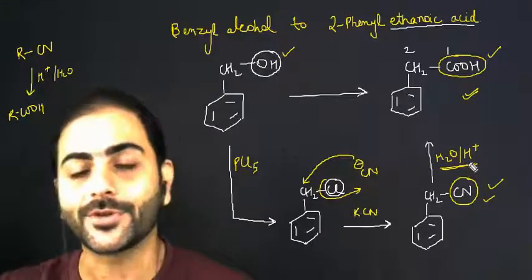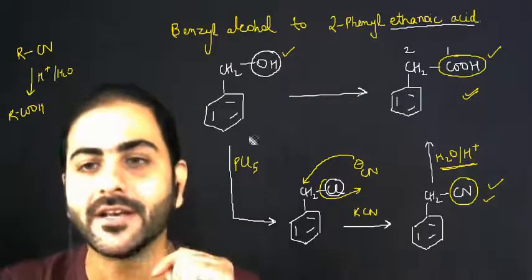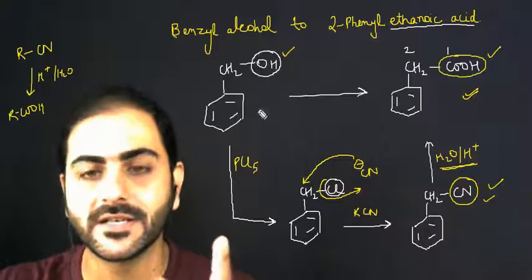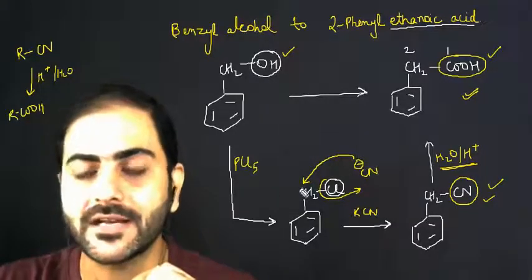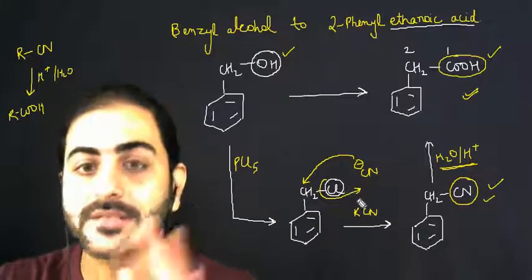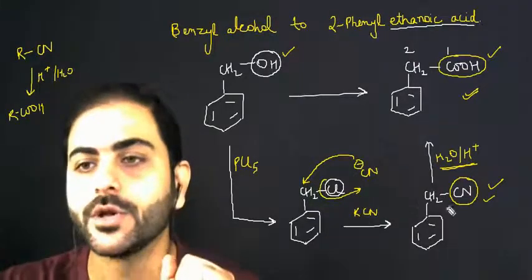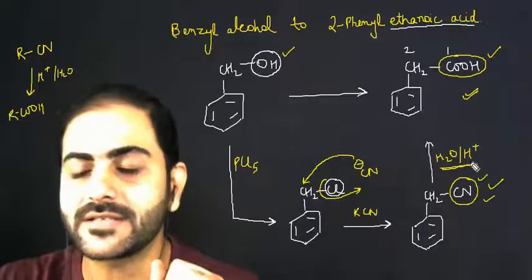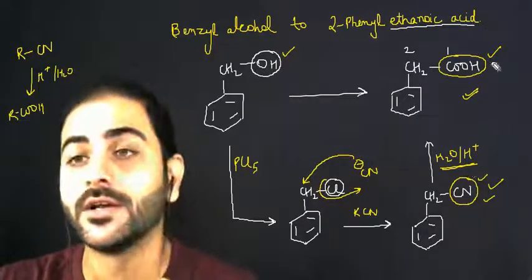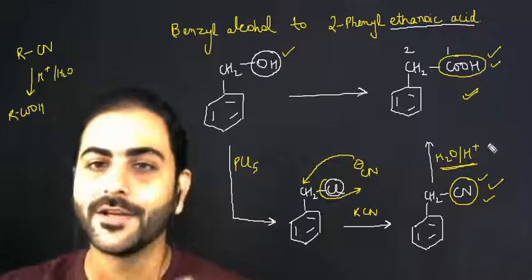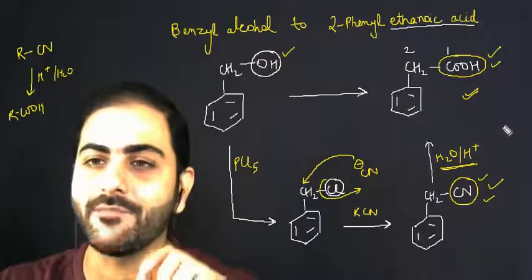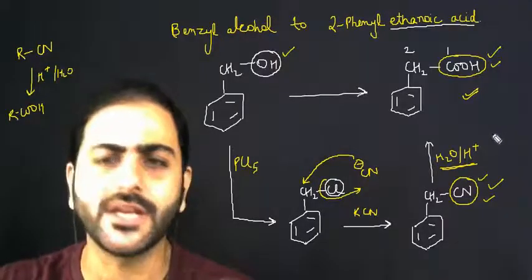Understood? So in this small conversion, we have seen three things. The first thing is chlorinating agent PCL5. The second thing is cyanide attack and chlorine can be used as substitution reaction. And the third thing is, if you add cyanide and H+, then you get carboxylic acid. These conversions are great, which are good and important. This is very important. Your JEE Mains, NEET, boards are here.